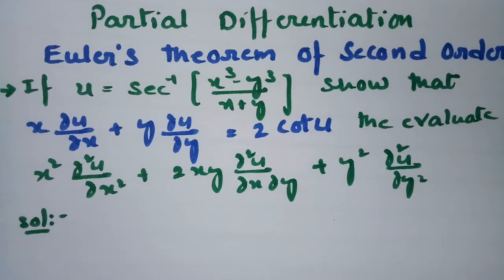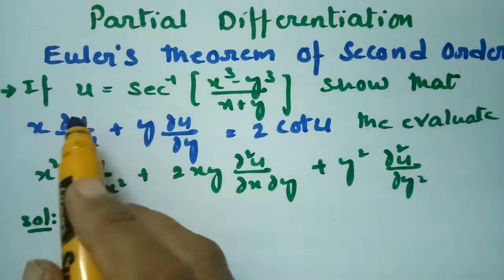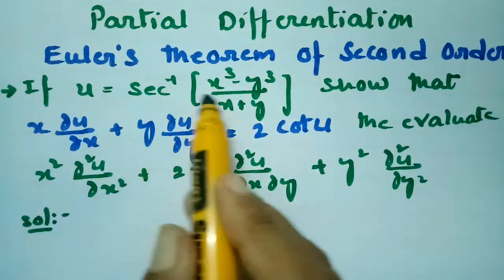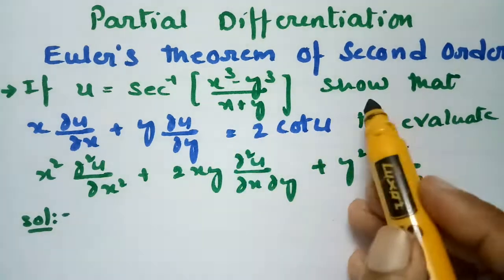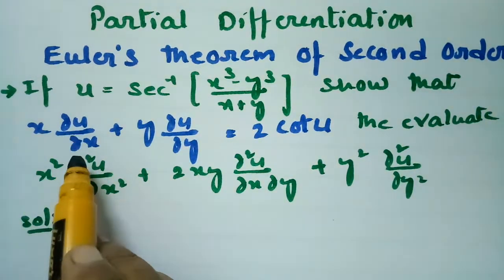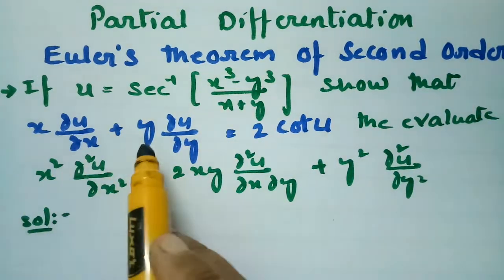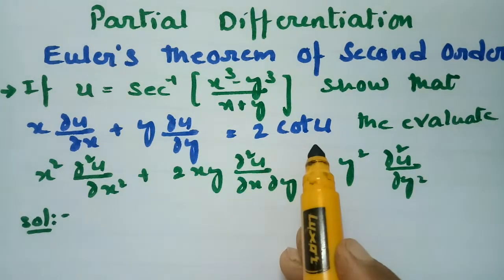In today's video, I am going to solve the most important problem from partial differentiation. This is the Euler's theorem of second order. If u is given as secant inverse of x cube minus y cube by x plus y, we have to show that x into ∂u/∂x plus y into ∂u/∂y is equal to 2 cot u.